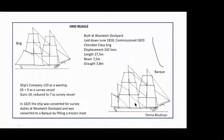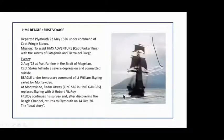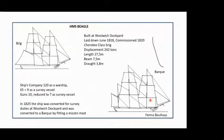The sails include the mizzen sail or the spanker, the foremast with its sails — the foresail, the lower foresail, and the upper foresail. The mizzen mast has its main sail, lower main sail, and upper main sail, and in the front you have a double bowsprit.